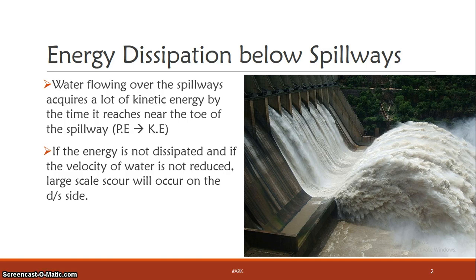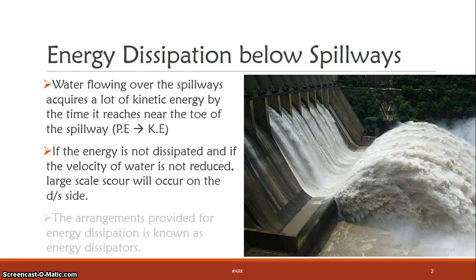If we discharge water downstream with high energy, it will damage the structures — the beds and the sides are scoured. This covering or scouring propagates on the upstream side and will affect the entire structure. So in the spillway, when we discharge water downstream, it is not safe unless we dissipate the energy.